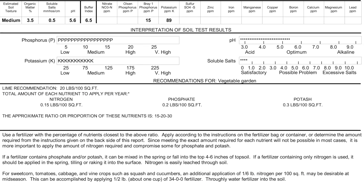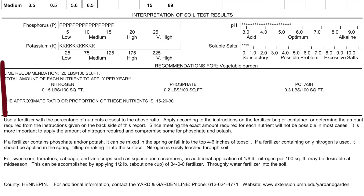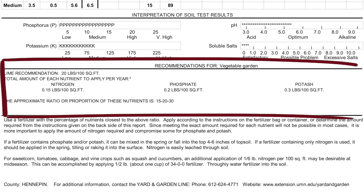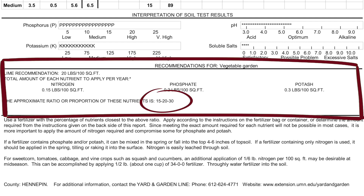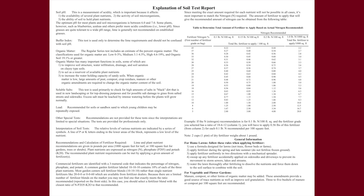The recommendation section at the bottom is especially helpful. The soil lab provides nutrient and fertilizer recommendations that are tailored to your soil. The rest of the page and on the back have more explanations about your results. Let's walk through these results together one at a time.